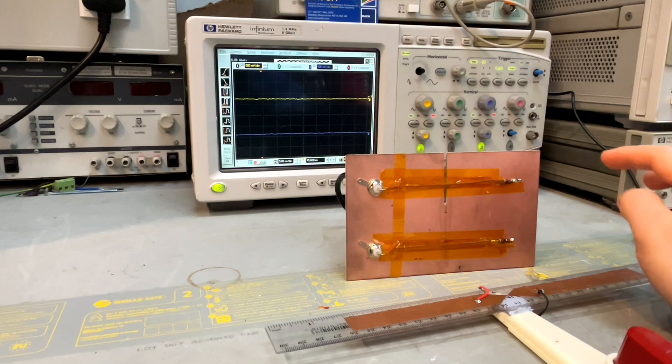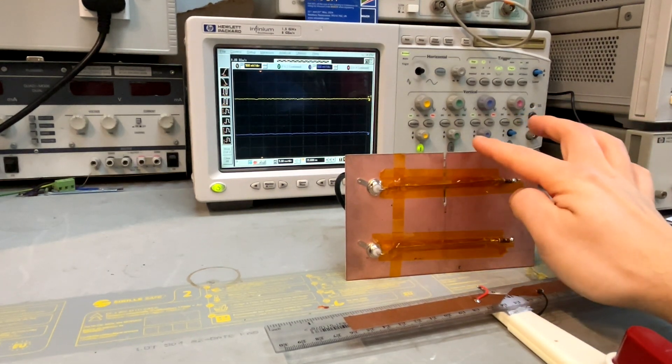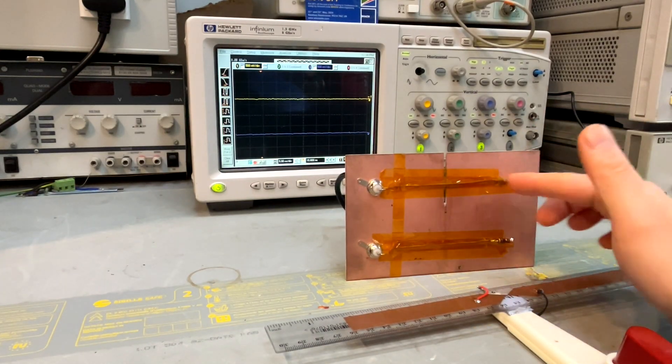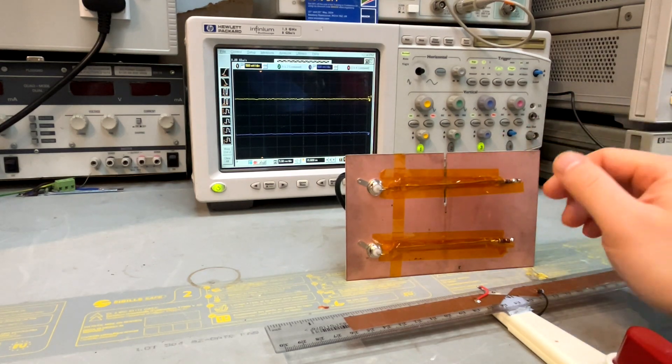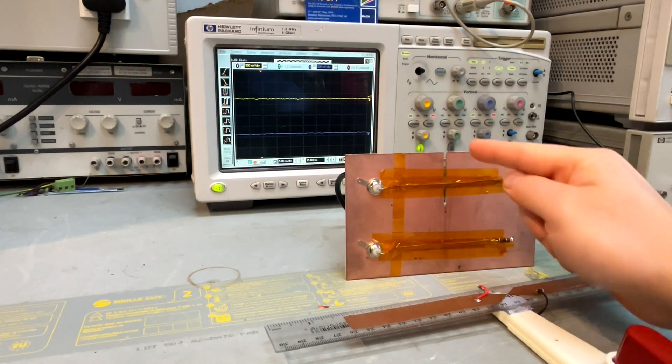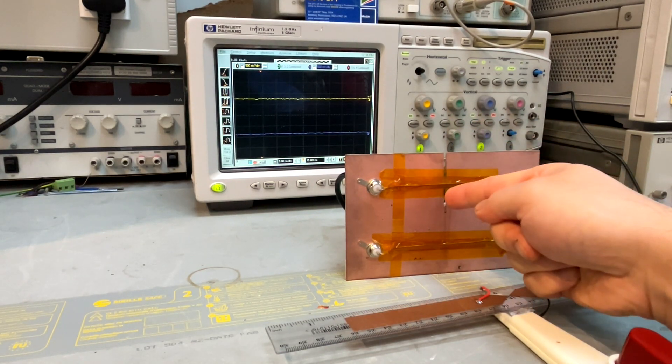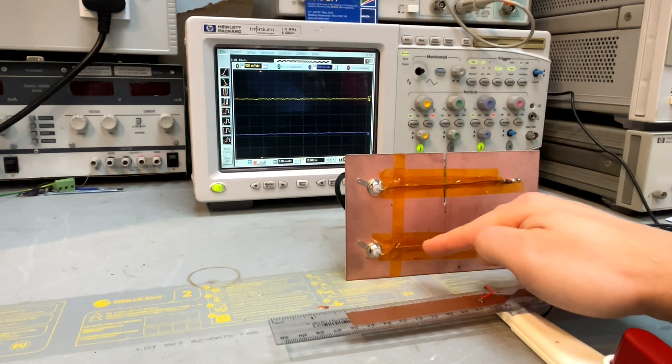So the idea is very simple. This represents a two-layer PCB where we have a ground layer and then we have two traces running over the ground. The only difference between these two is that for this trace we have a gap or break on the ground plane, where this trace actually has a continuous ground.